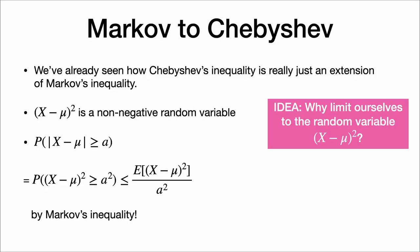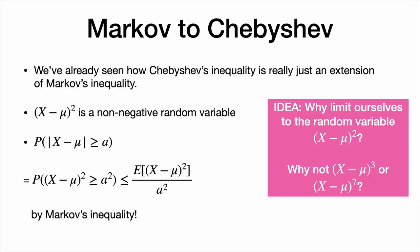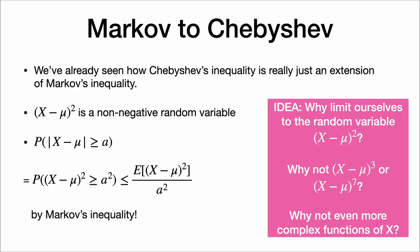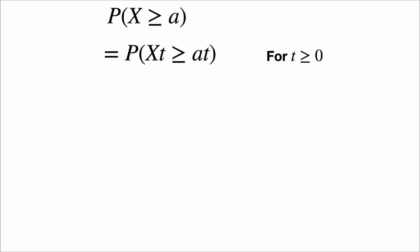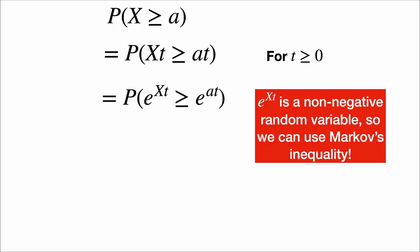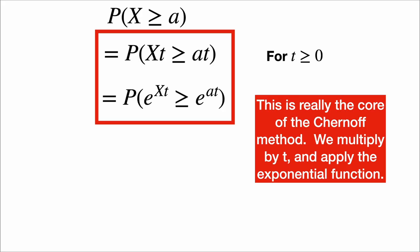The idea we're going to explore here is: why limit ourselves to the random variable (x minus mu) squared? Why not (x minus mu) cubed or (x minus mu) to the seventh power? And why not even more complex functions of x? This method can be used for lower tail inequalities too, but let's try to find an upper tail bound. If I want to find the probability that x is at least a, I multiply both sides by t, where t is some positive number. Then applying the exponential function to both sides — e to the xt is a non-negative random variable, so we can use Markov's inequality. This is really the core of the Chernoff method: multiply by t and apply the exponential function.